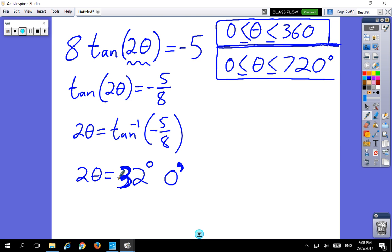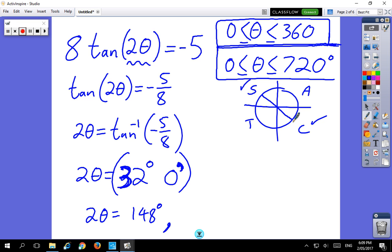But I need to check what quadrants it exists in. And the quadrants it exists in are... All stations to central... It's negative. So I'm not in quadrant 1. I'm not in quadrant 3. I must be in quadrants 2 and 4. Now 32 degrees in here means I'm going 180 minus 32. So this is not correct. That's not actually what I want. I want an angle that is this big. But it's in quadrant 2. So I go 180 minus 32. So that's 148 degrees. So 2θ equals 148 degrees. And then I want it in the fourth quadrant, which is 360 minus 32 degrees. This is 328 degrees.